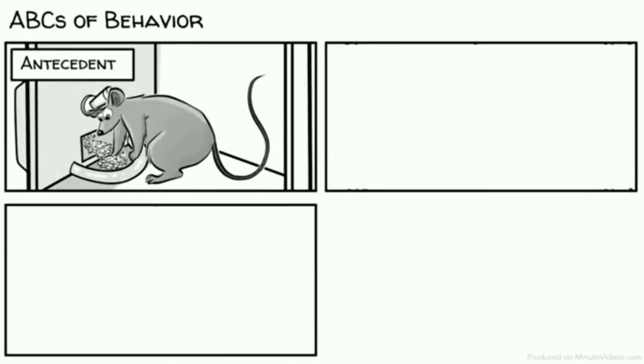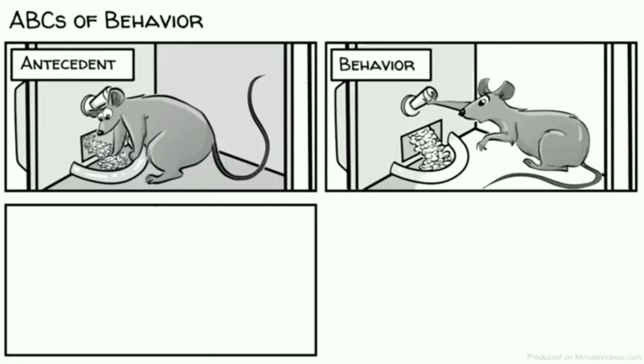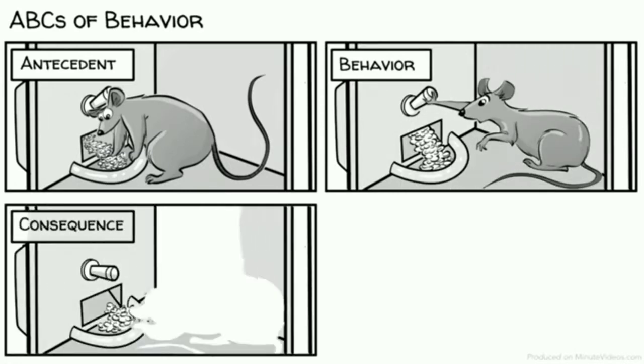Conditioning happens in a three-term contingency, today known as the ABCs of behavior. A stands for antecedent. The rat accidentally hits the lever that triggers the release of food. B stands for behavior, and refers to the response. The rat keeps pressing the lever. C stands for consequence. Food keeps coming out.